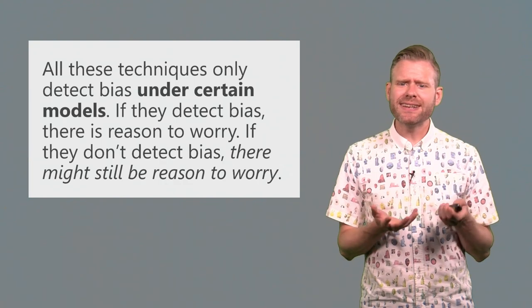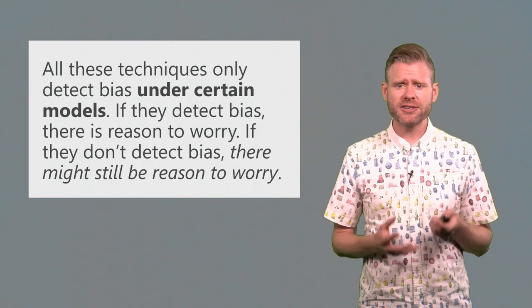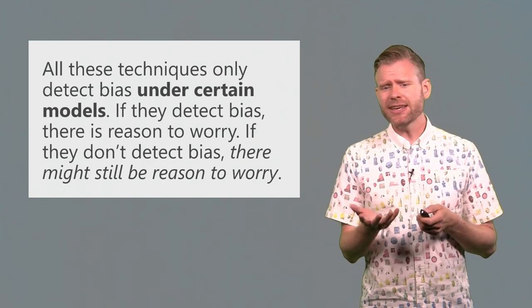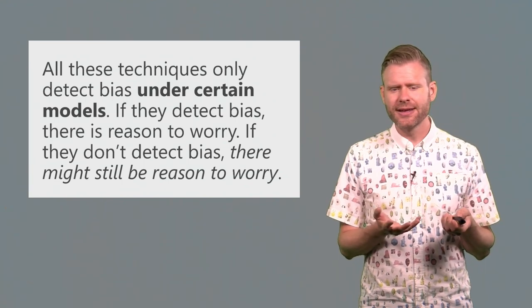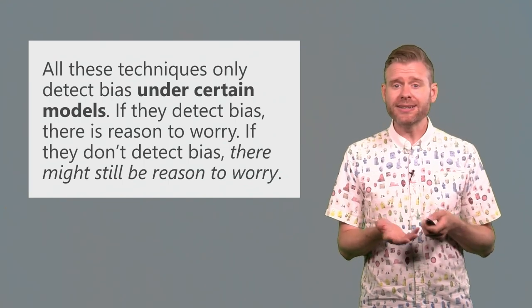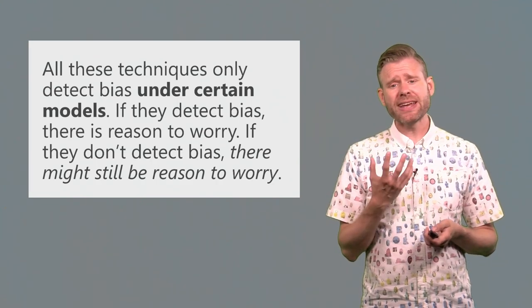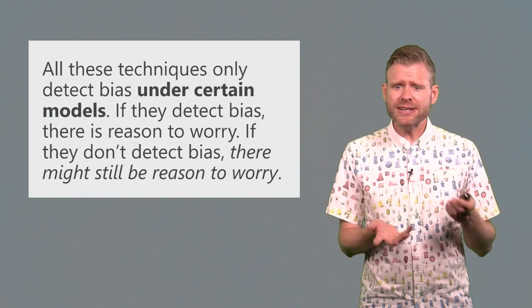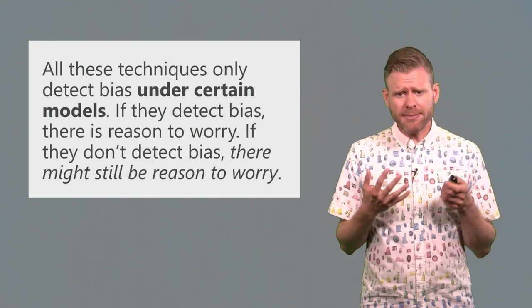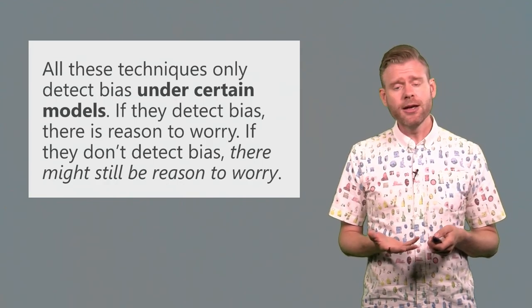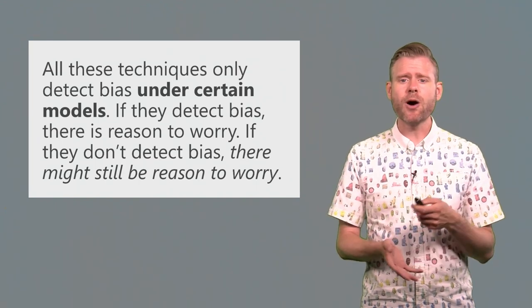Now all these techniques that I discuss only detect bias under certain models. They all have specific assumptions. So they cannot give universal yes, there is bias, no, there is no bias answers. They tell you something about the probability of bias being present under certain assumptions of the model. If they detect bias, there might be reason to worry. It's a red flag that goes up. If they don't detect bias, there might still be reason to worry. But the bias is not detected under the models that these bias detection tools operate on.